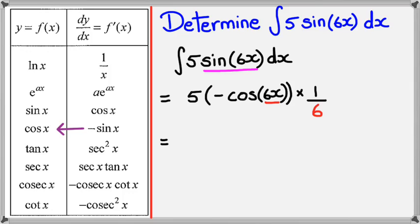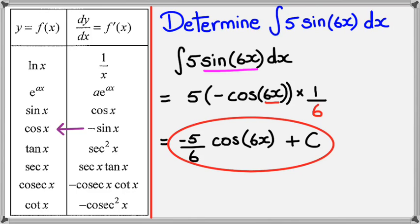So simplifying this, I'm going to have negative 5 over 6, cos 6x. And of course, don't forget the plus c. Now this is my final answer inside the red circle here.